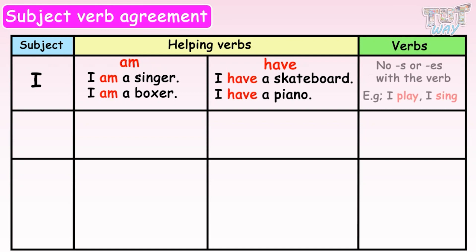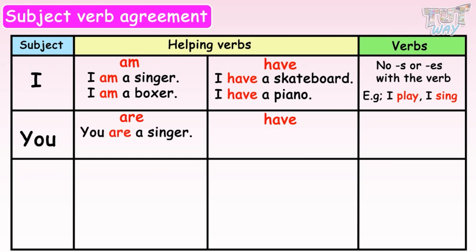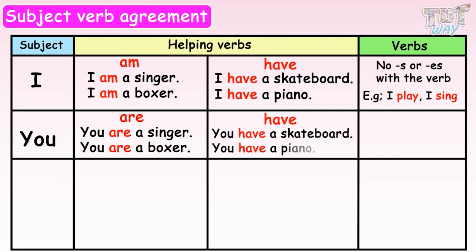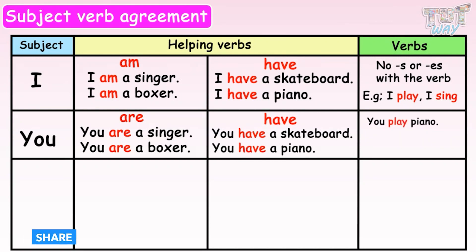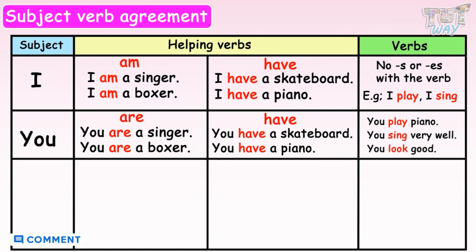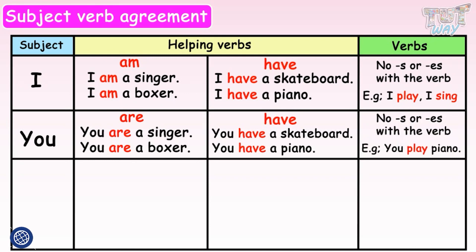And if the subject is you, the helping verbs are and have are used. For example: You are a singer. You are a boxer. You have a skateboard. You have a piano. And if we are using a verb with you, no S or ES is used with the verb. For example: you play piano, you sing very well, you look good.